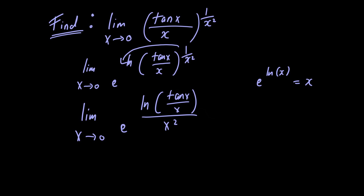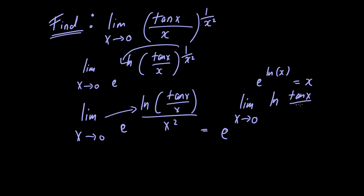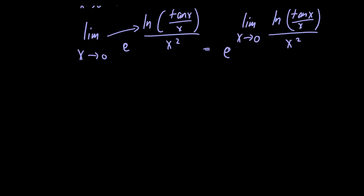Since the exponential function is continuous, we can move this limit inside the exponential function. Doing so we have e raised to the limit as x approaches 0 of the natural logarithm of tangent of x divided by x, all divided by x squared.